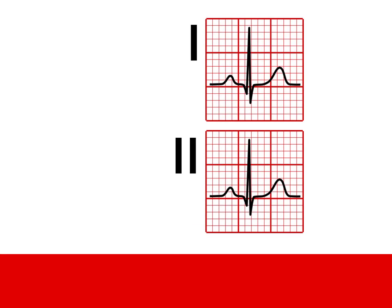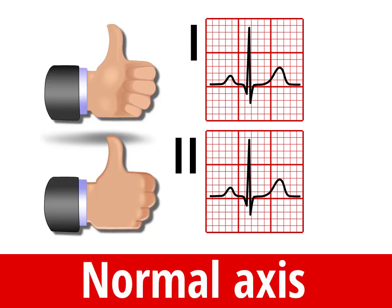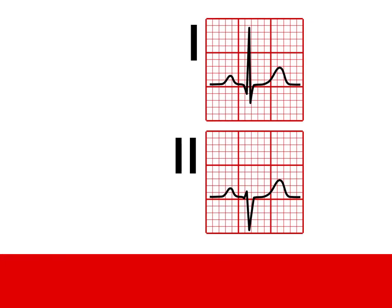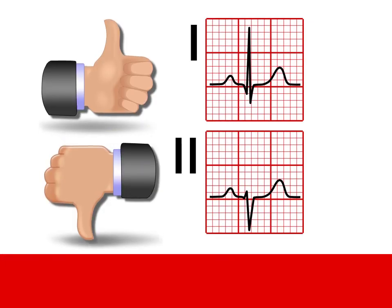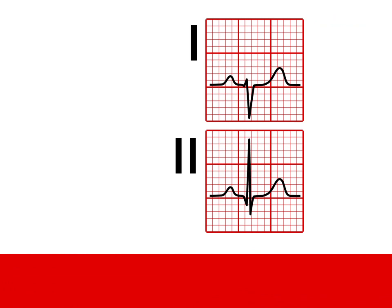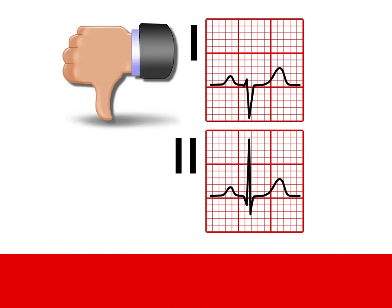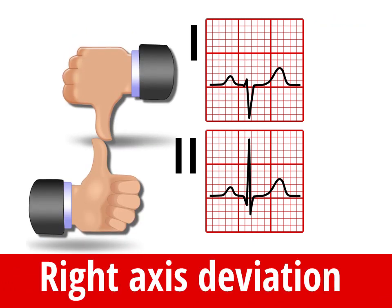If leads 1 and 2 are both positive, that's two thumbs up and the axis is normal. If lead 1 is positive but lead 2 is negative, your thumbs have left each other and that's left axis deviation. If lead 1 is negative and lead 2 is positive, your thumbs are heading right for each other and that's right axis deviation.